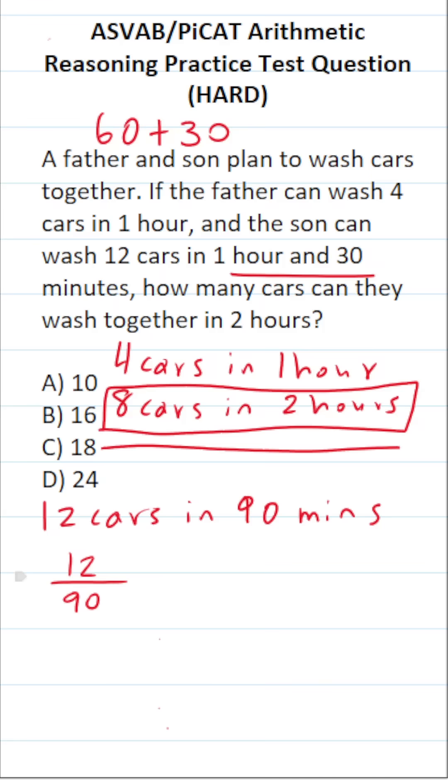And let's break down 90 minutes into 30 minute intervals. That means he could wash 12 cars over 30 minutes plus 30 minutes plus 30 minutes.